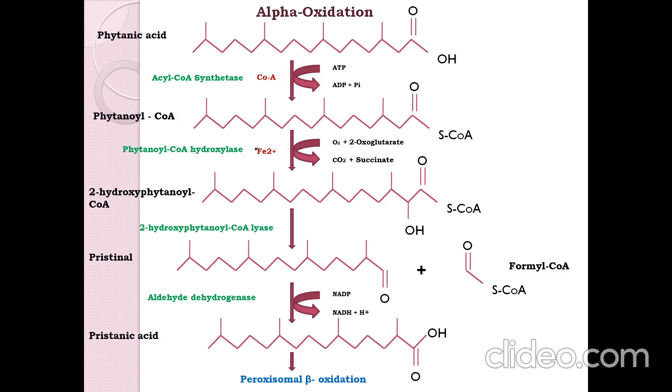There is utilization of ferrous and oxygen in this process. Further, in the next step the 2-hydroxyphytanoyl CoA is cleaved into pristinal and formyl CoA by the enzyme 2-hydroxyphytanoyl CoA lyase.